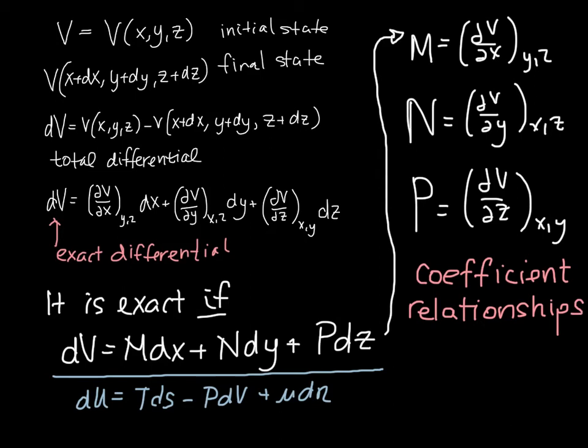And sometimes these give us useful information about thermodynamic relationships. Sometimes they give us information that's not particularly intuitive, and sometimes they give us information that is, in fact, intuitive. And we will work with this. So these are the coefficient relationships, and we will look in a minute and an example sort of of how that works.